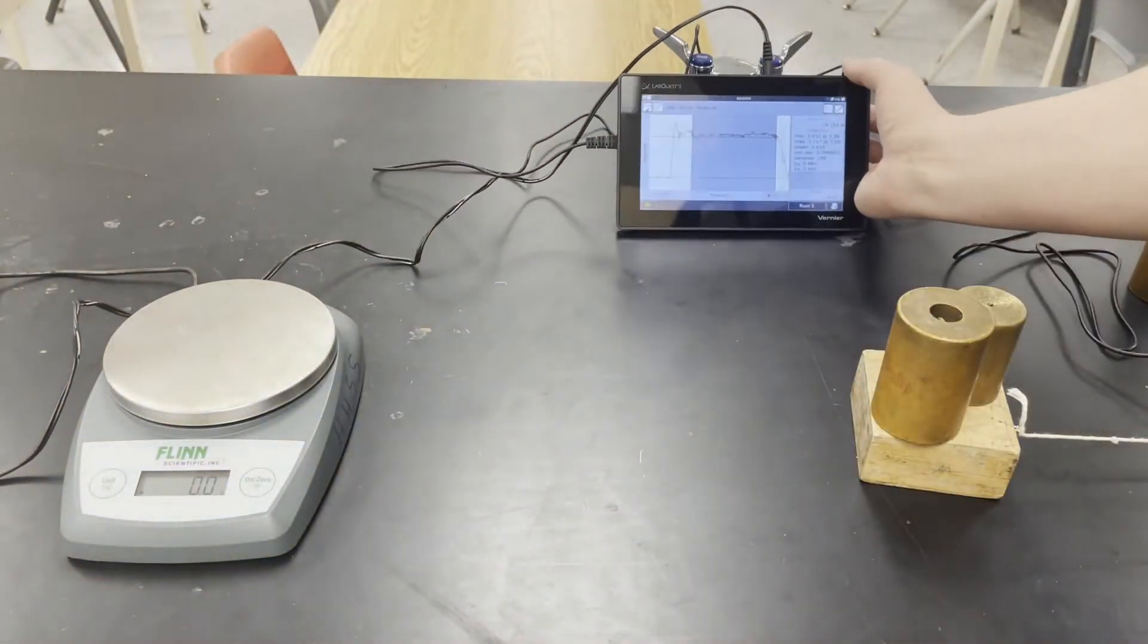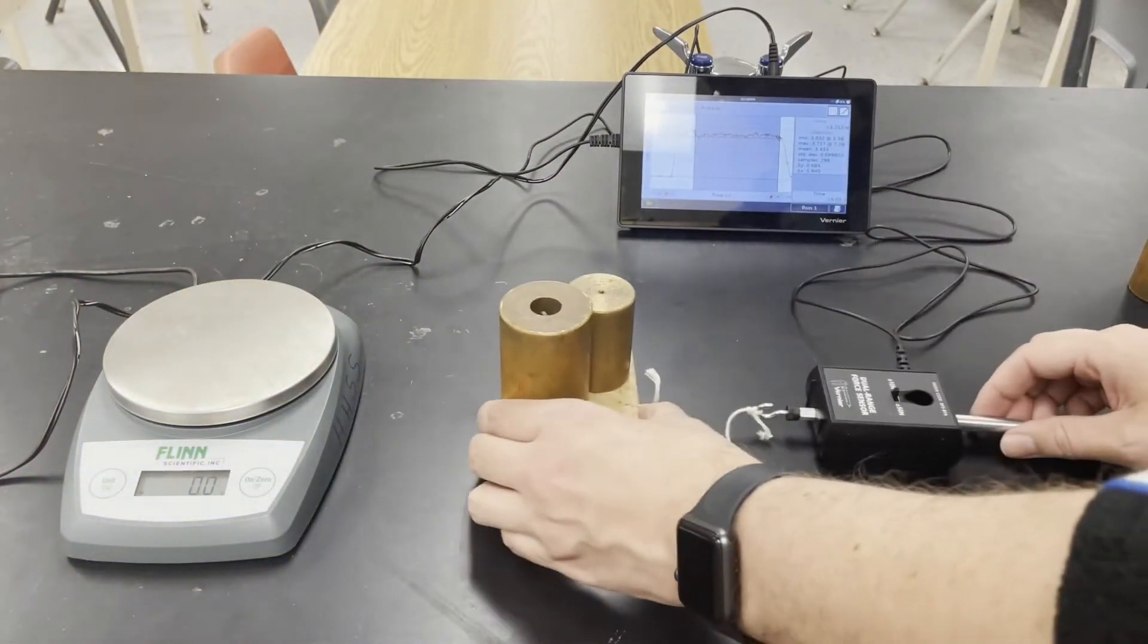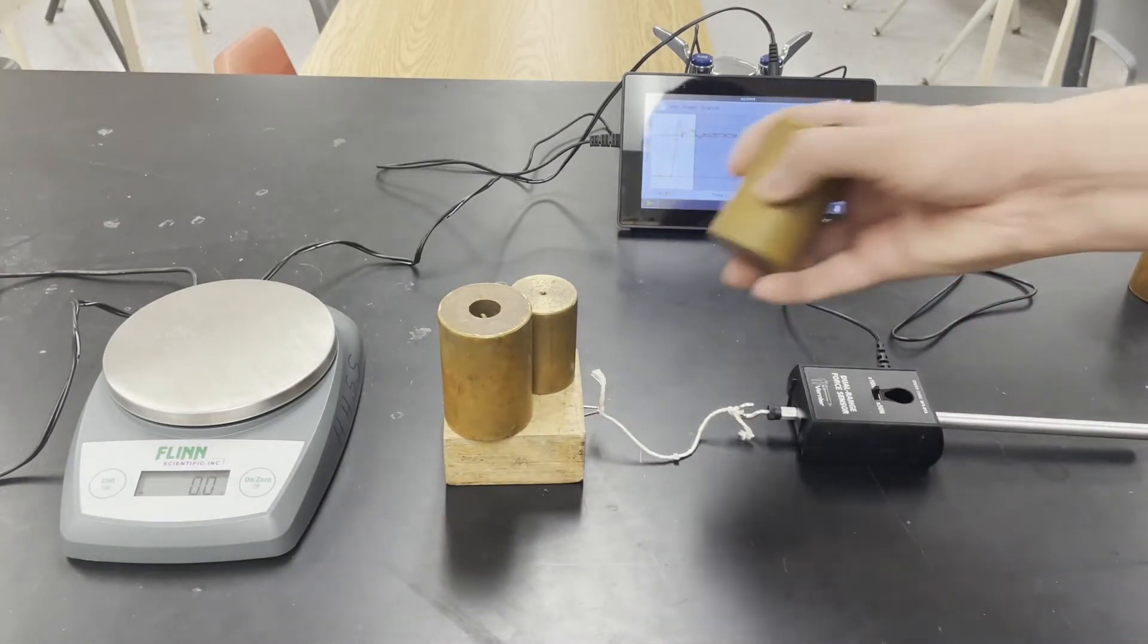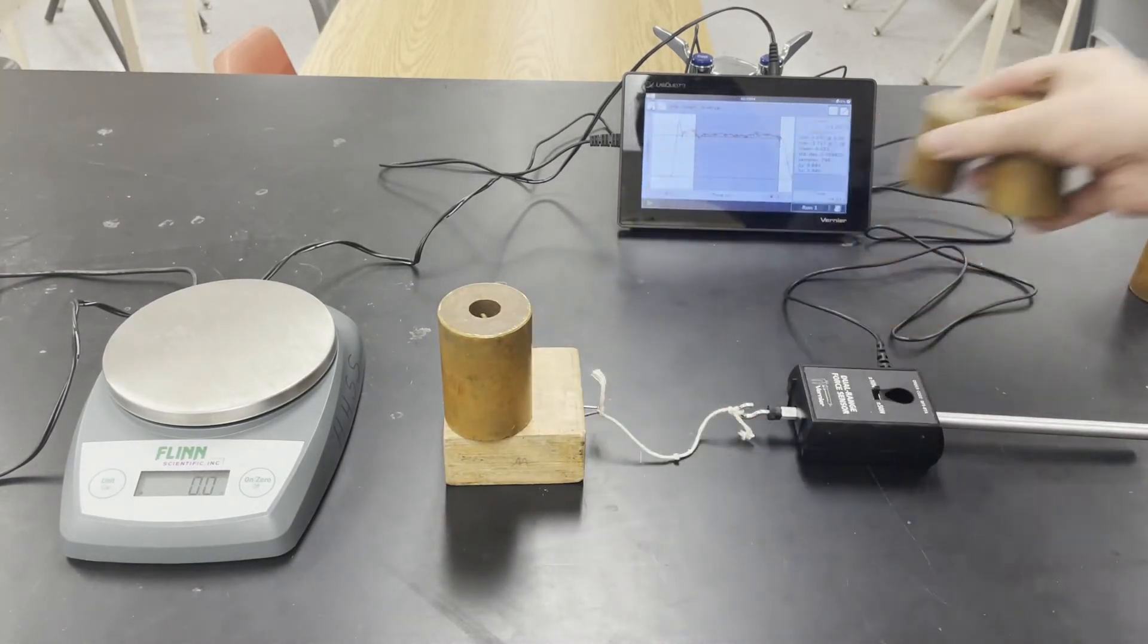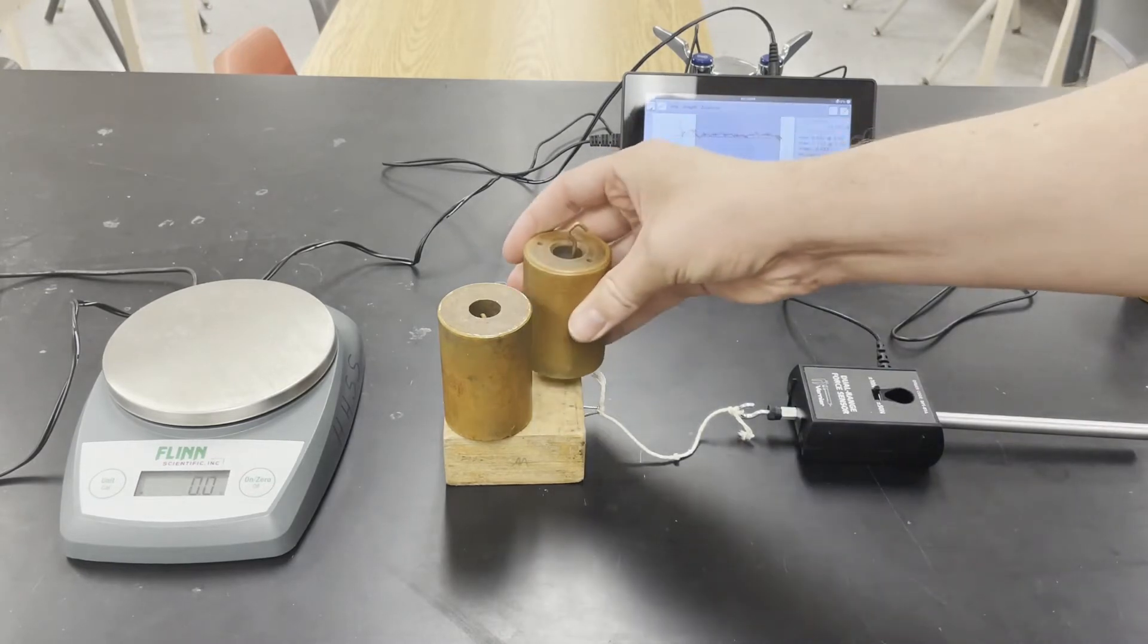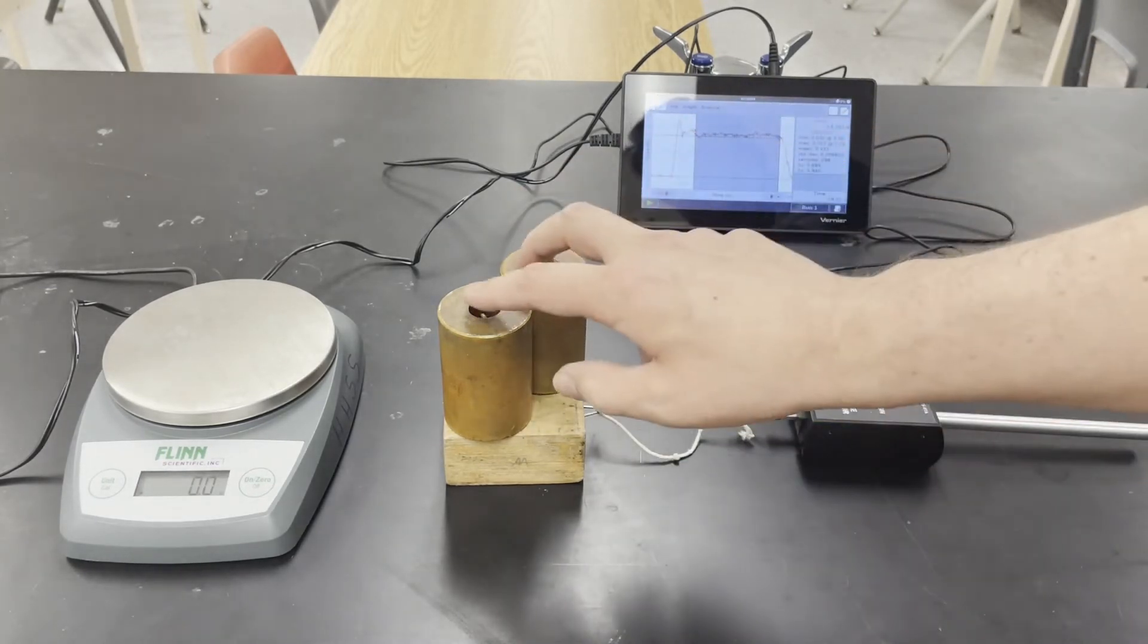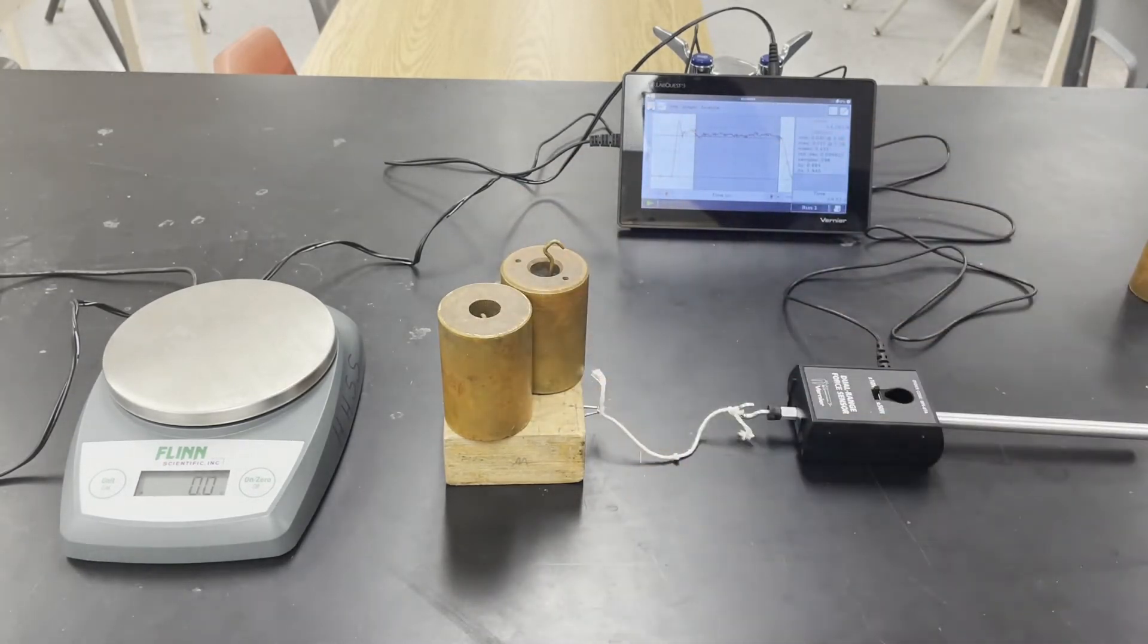Now let's add some more mass. I'm going to remove the 500 grams and add another one kilogram. So that's a total of two kilograms plus the mass of the block.